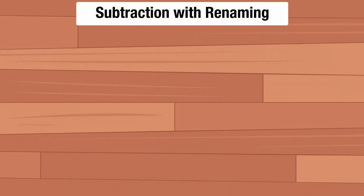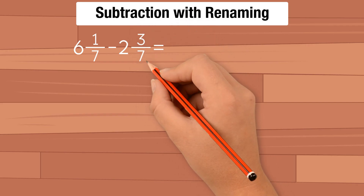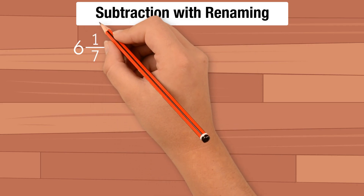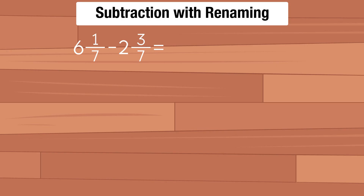Subtraction with renaming. Let's say we want to subtract 6 and 1 seventh minus 2 and 3 sevenths. First, we subtract the fractional parts. We can't subtract 3 sevenths from 1 seventh because 3 is greater than 1.